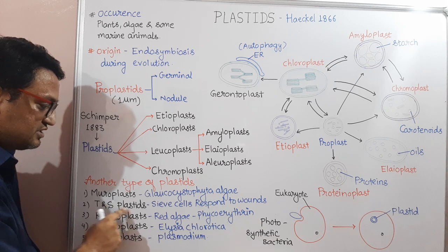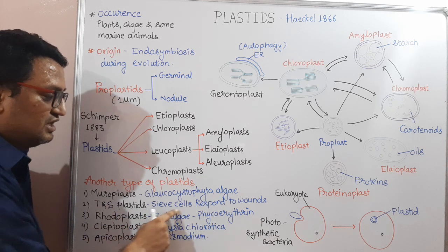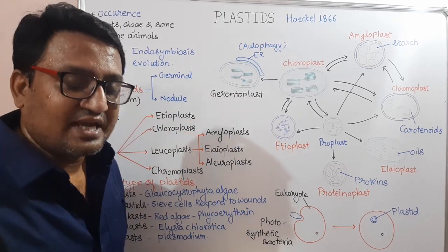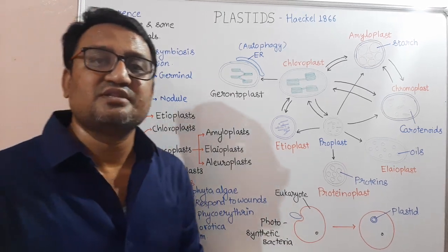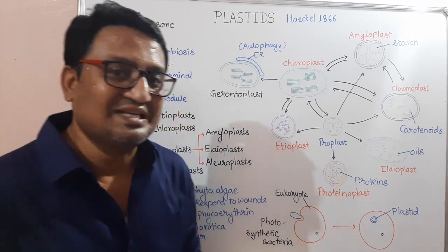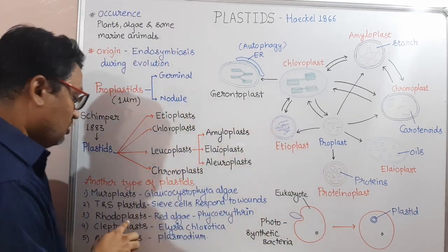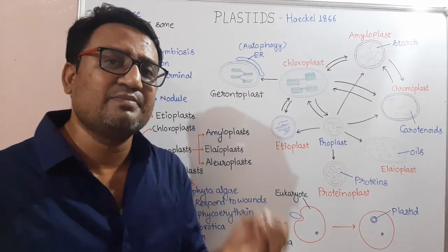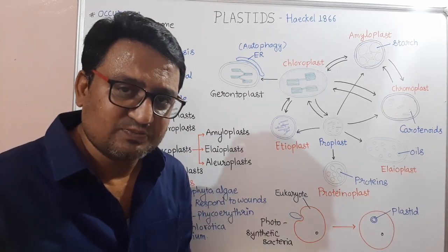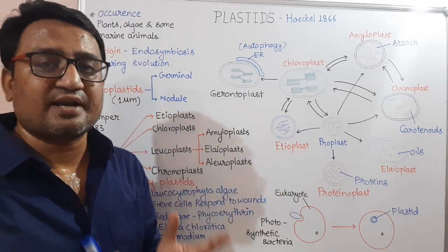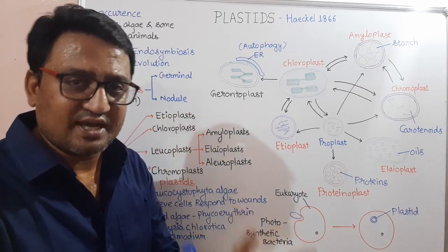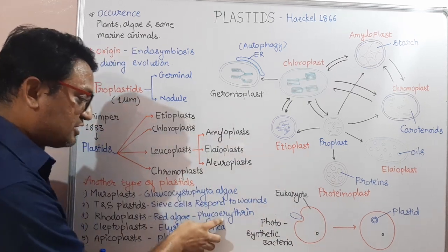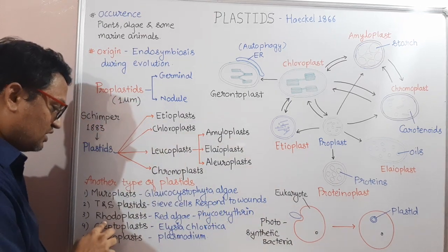The next type is T and ES Plastids, which are present in sieve cells of phloem and they respond to wounds. Next is Rhodoplasts, present in red algae. The red-colored pigment called Phycoerythrin is present in Rhodoplasts. Examples include Batrachospermum, Sargassum, and Polysiphonia — these are all red algae. So in red algae, Phycoerythrin is present and the Plastids are called Rhodoplasts.